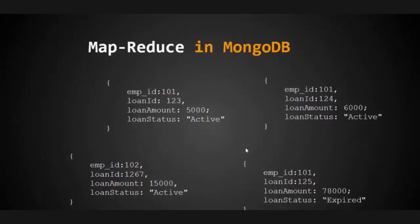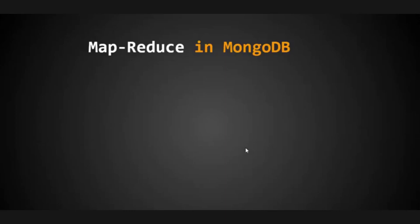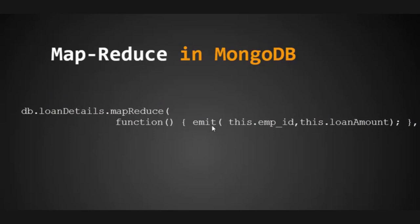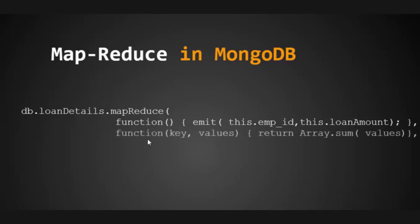Here's how we write the map reduce function. We use db dot loanDetails dot mapReduce. Inside the map function we use emit, which outputs two values: the employee ID as the key and the loan amount as the value. The reducer function takes a key and values array and returns the sum of all values for that key.